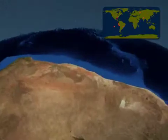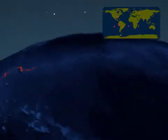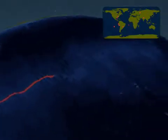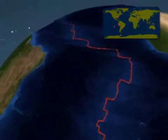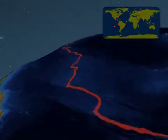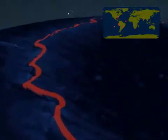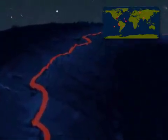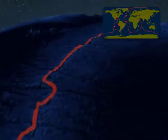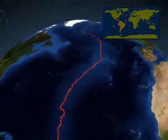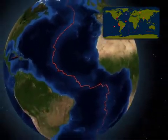The Andes Mountains are the longest mountain range on land, but the longest range on earth is actually below the Atlantic Ocean. The mid-Atlantic ridge is 10,000 kilometers long and connects with other mid-ocean ridges that encircle the globe at the base of every ocean, with a total length of 80,000 kilometers.